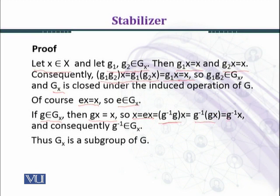This is equal to g^(-1) within bracket gx. Since g belongs to GX and when you multiply g with x, x remains fixed, we can use this condition. So this equals g^(-1)x. Therefore we can see that g^(-1)x is also equal to x, so g inverse belongs to GX.